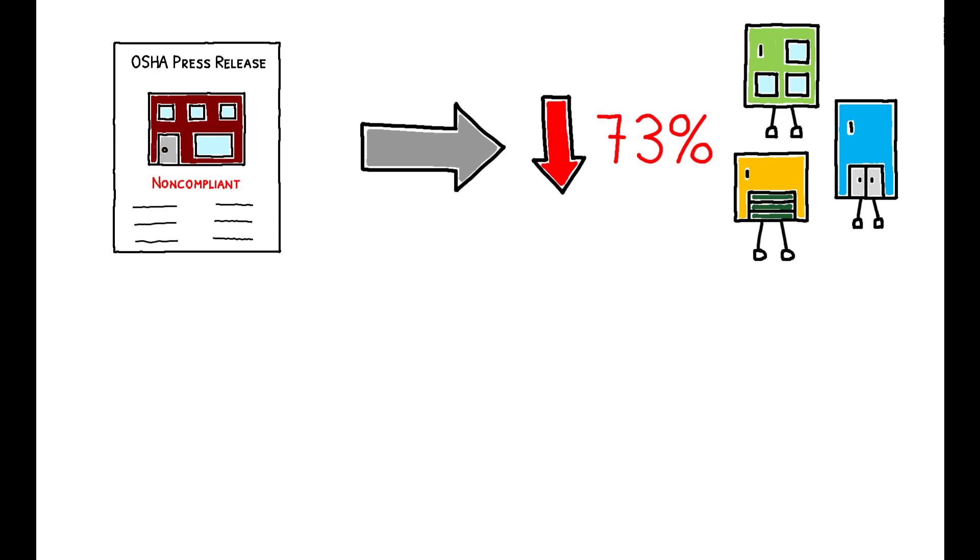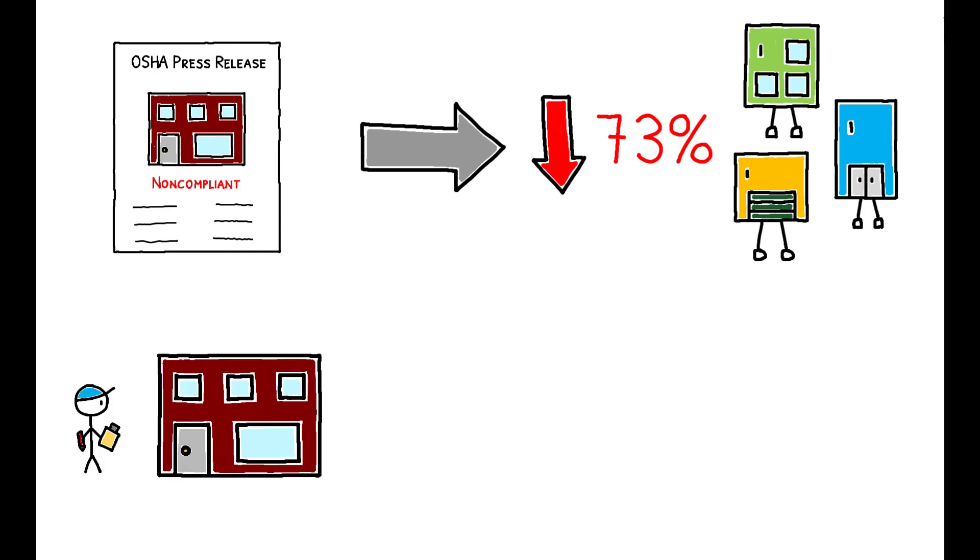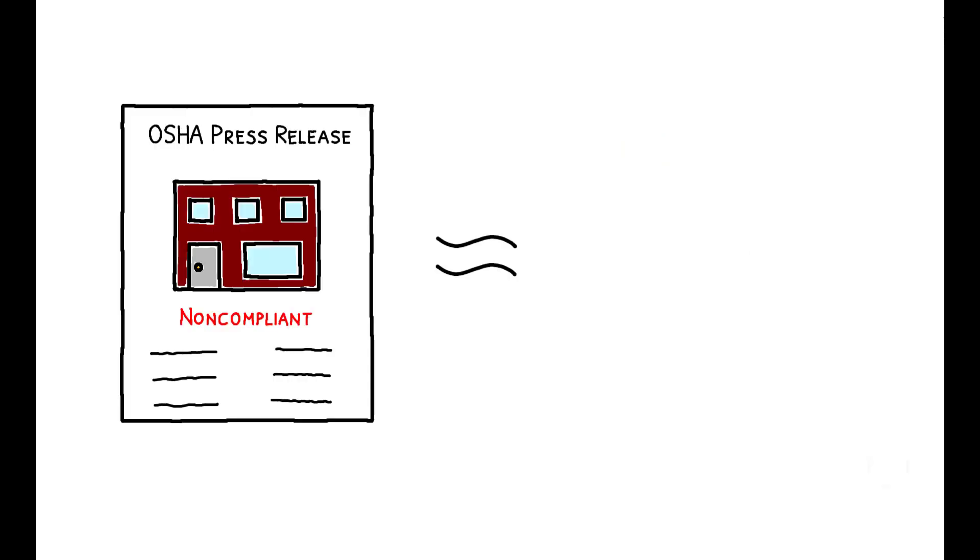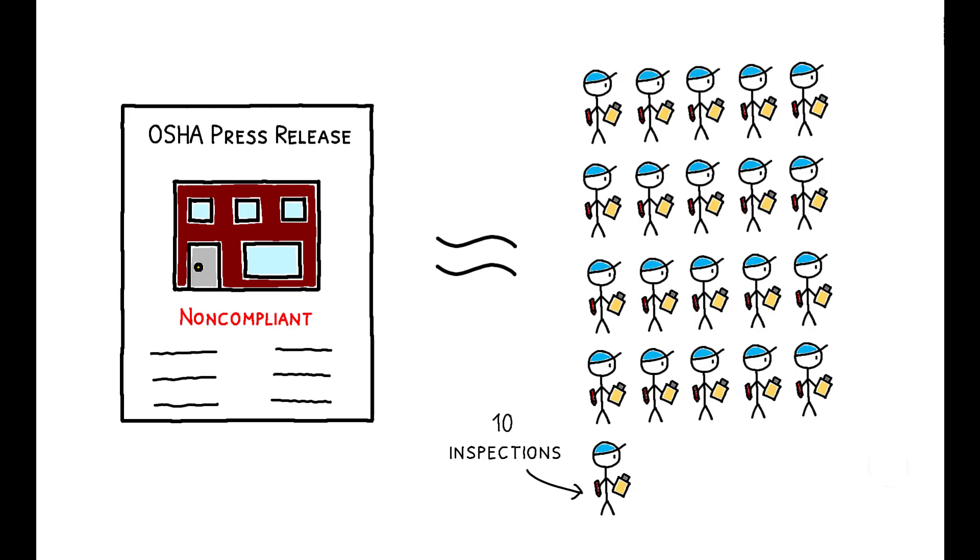The magnitude of these effects is large. A single press release leads to 73% fewer violations at peer facilities. In contrast, other research has estimated that a typical OSHA inspection leads to only 48% fewer violations at the same facility in future. The results imply that OSHA would have to conduct an additional 210 inspections in order to achieve the same improvement in compliance as is achieved with a single press release.